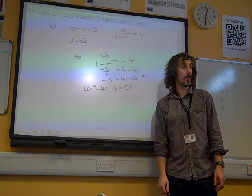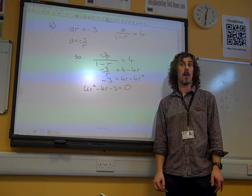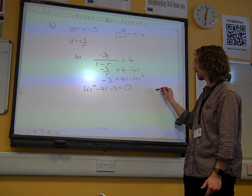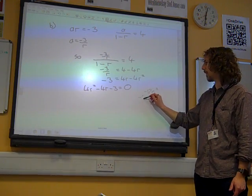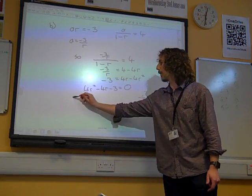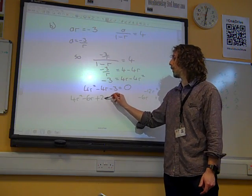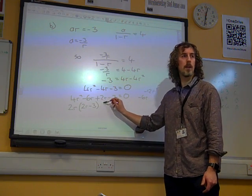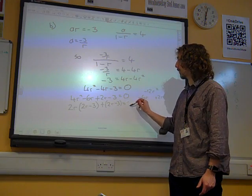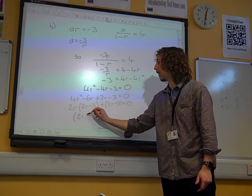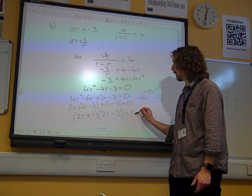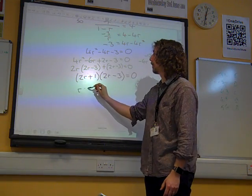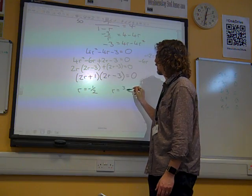So now we've got a quadratic which we're going to try and solve correctly hopefully. We could use the formula or we could try and factorize it. That's minus 12R squared, so that's minus 6 and plus 2. So 4R squared minus 6R plus 2R minus 3 is 0 giving us 2R times 2R minus 3 plus 2R minus 3 is 0 so we've got the whole thing as 2R plus 1 times 2R minus 3, which gives us as we expected two values: R is minus 1 half and R is 3 over 2.